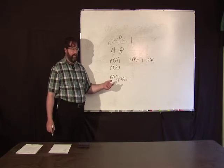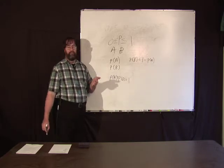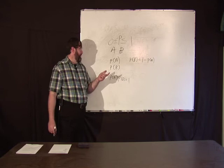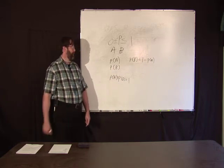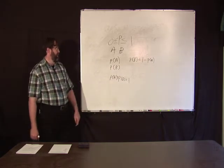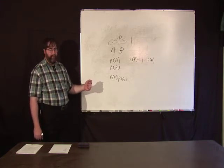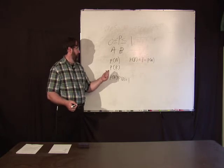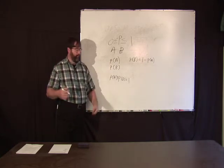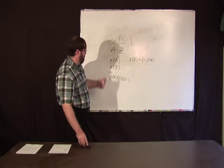Let's say the coin is asymmetric — heavier on one side — so there's a two-thirds probability of heads and one-third probability of tails. The same rule applies: two-thirds plus one-third equals one.